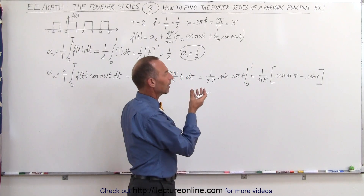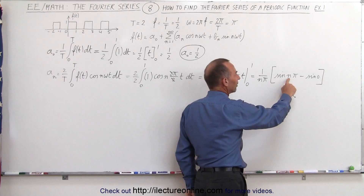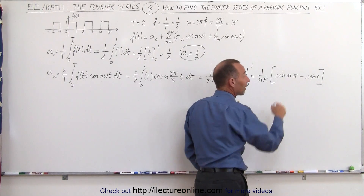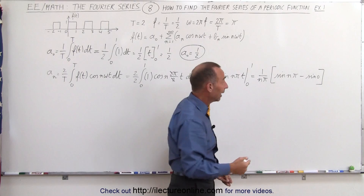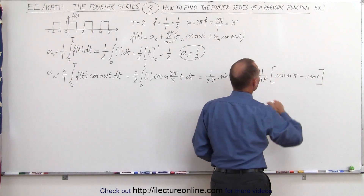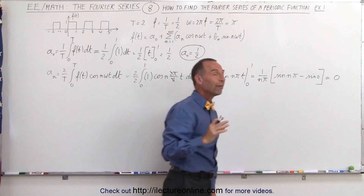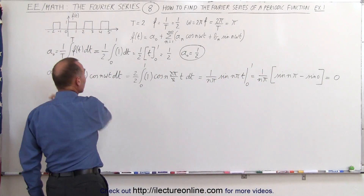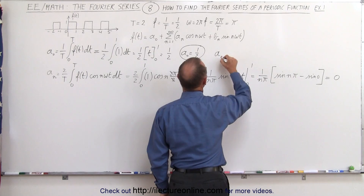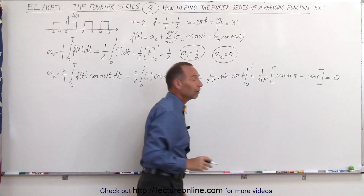Here we realize that n is an integer, and the sine of 1·π, 2·π, 3·π, and so on will always be 0, and the sine of 0 is also 0. So this whole expression equals 0, meaning all values of a sub n equal 0.